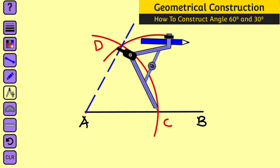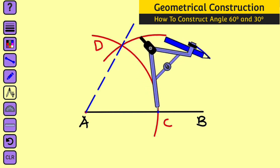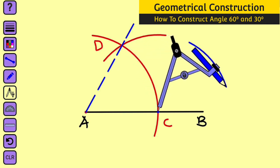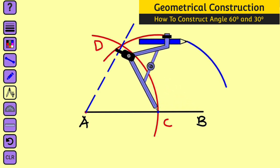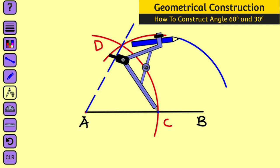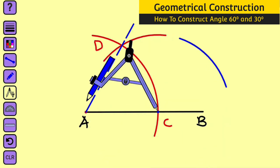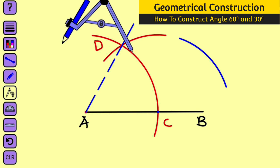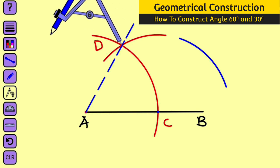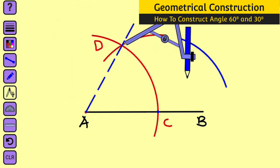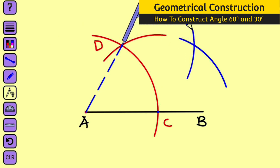Bring your compass and place it at either point C or point D — it is already on point C. Construct an arc so that it will be halfway to the vertex A. Now take it to point D and construct another arc to cut the initial one. Remove the compass and name the point of intersection as E.